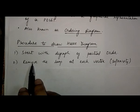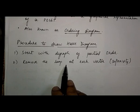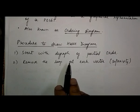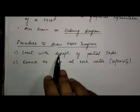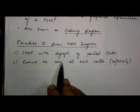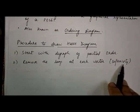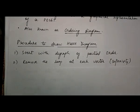The second step is that we have to remove the loop, or self loop, from each vertex. This means we remove the reflexivity property — that is, pairs like (1,1), (2,2), (3,3), (4,4), and so on.